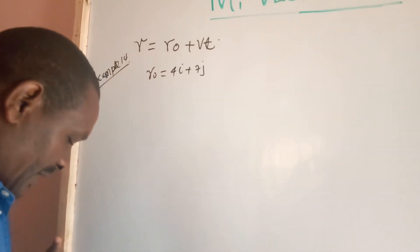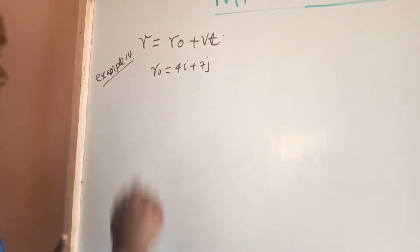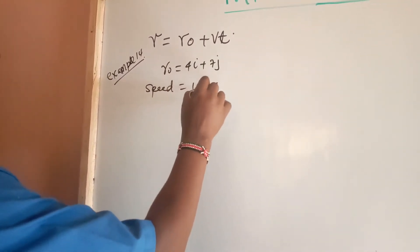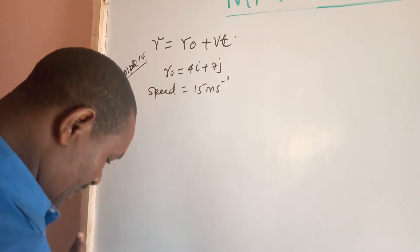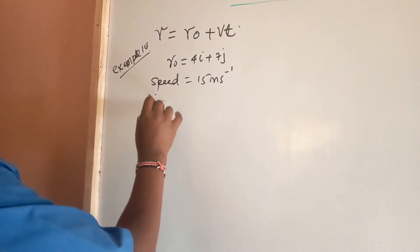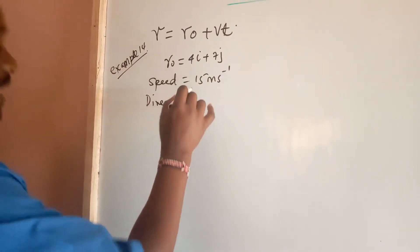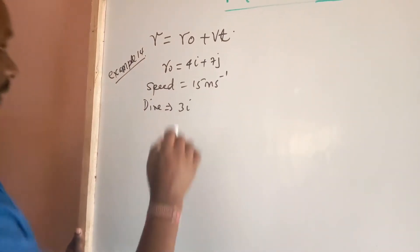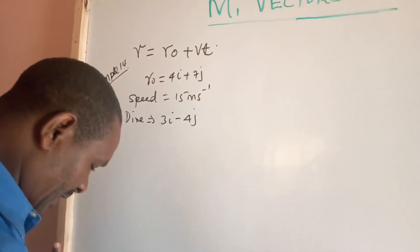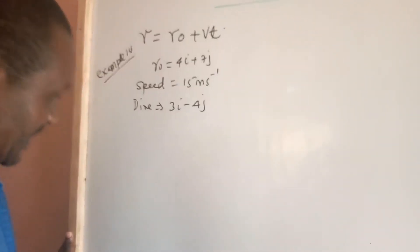And it's moving with speed of 15 meters per second in the direction of 3i minus 4j. Find its position vector after 2 seconds.